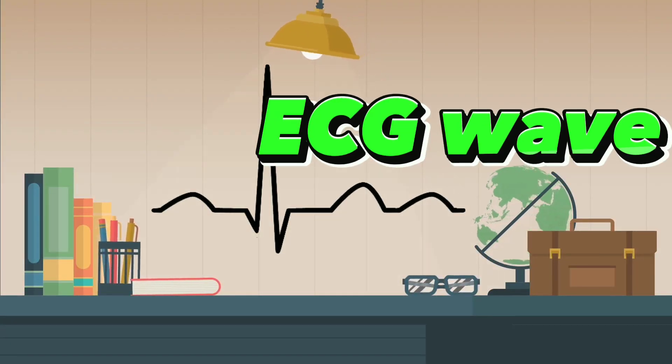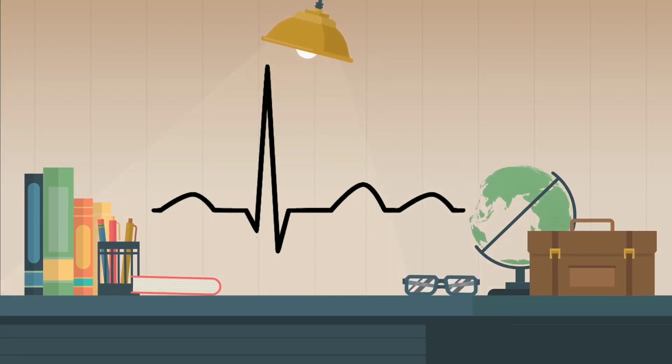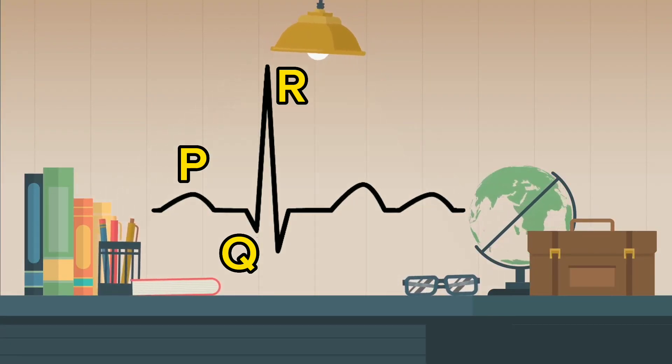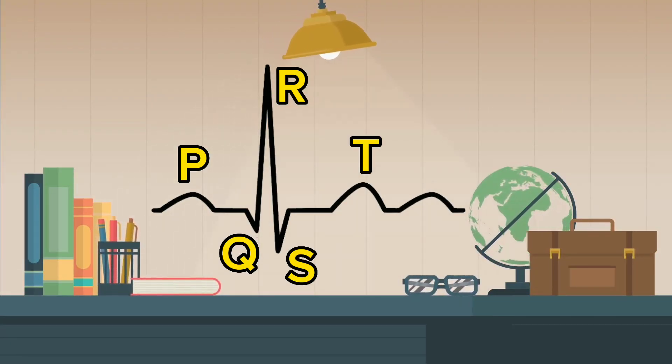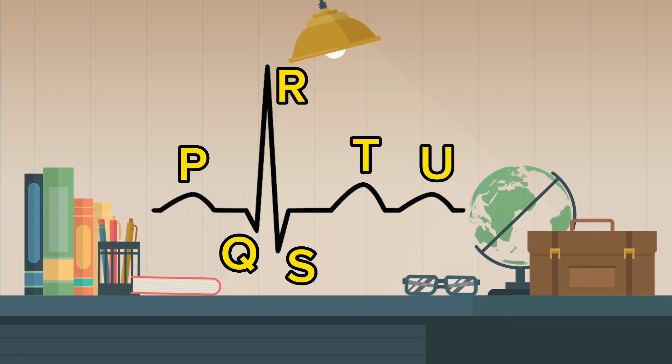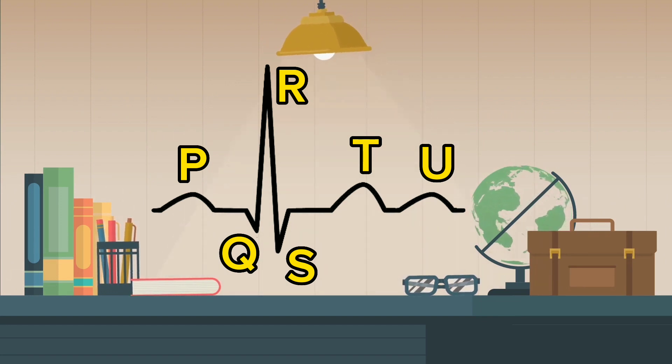This is a normal ECG wave. It has P, Q, R, S, T and sometimes U wave.